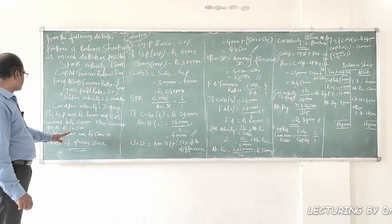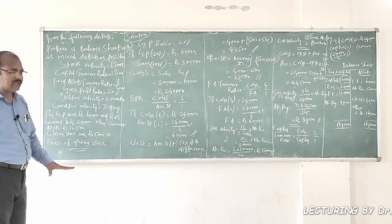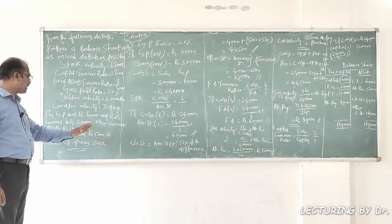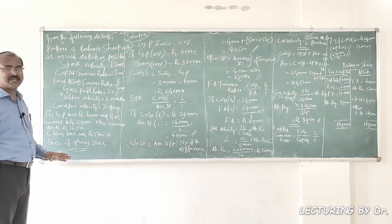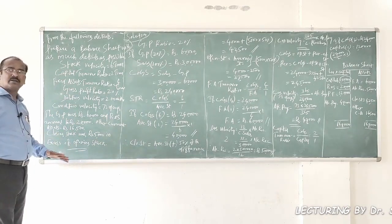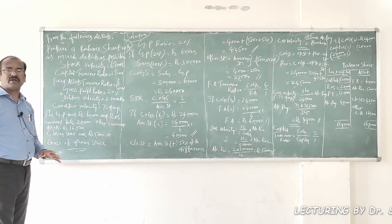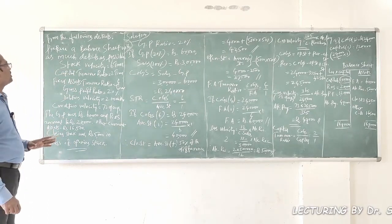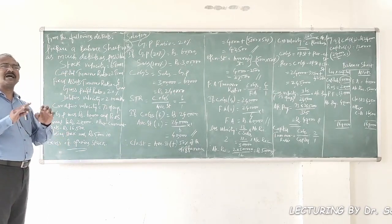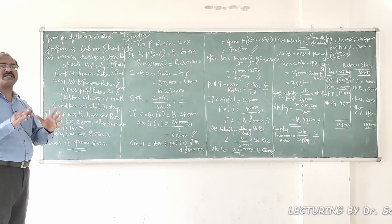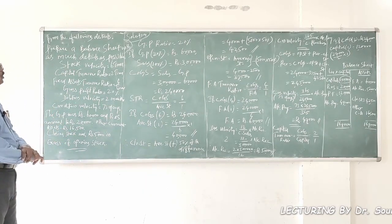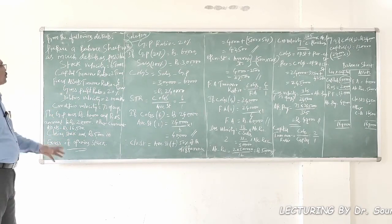Other current assets amounted to 16,500. Closing stock was 5,000 rupees in excess of opening stock. These are all the information given in the problem, based on which we need to prepare a balance sheet with as much details as possible. Now look at the problem to know where to start.